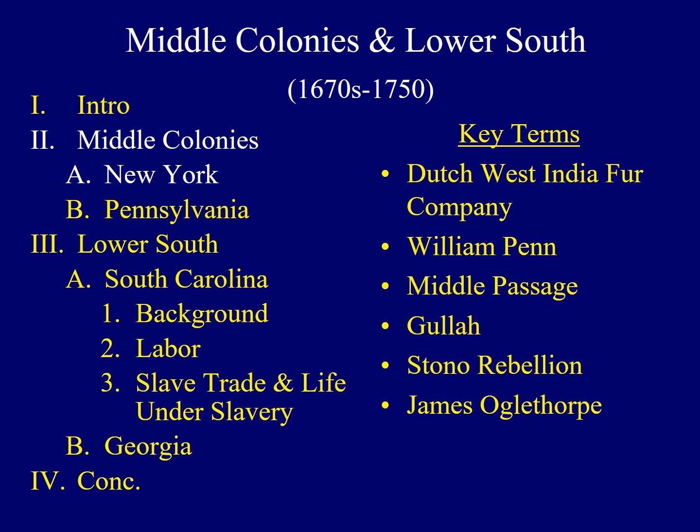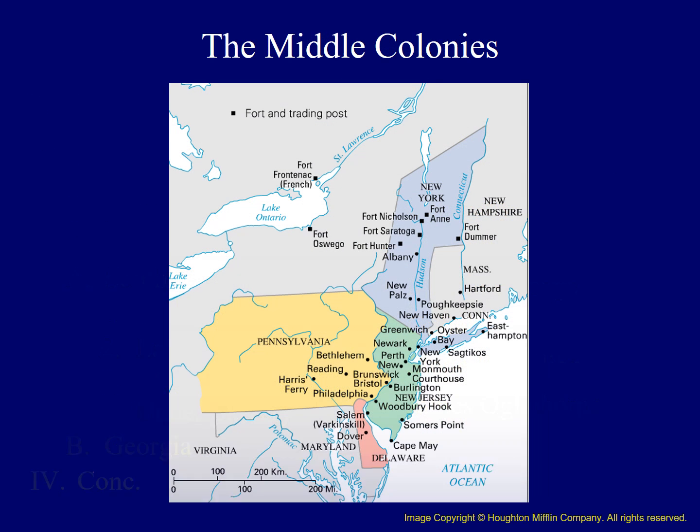New York and Pennsylvania were each part of the Middle Colonies. We will begin with a study of New York's early settlement by Europeans. This map identifies the major towns, cities, and forts included in the Middle Colonies. Eventually, the prosperity of the region was based on the thriving commerce of its largest cities, Philadelphia and New York, and on the commercial production of wheat.